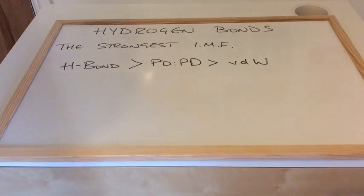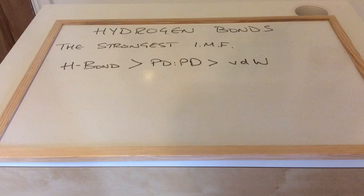In this video I'm going to look at hydrogen bonds. We'll start with the fact that hydrogen bonds are the strongest type of intermolecular force. The three intermolecular forces we need to know about are hydrogen bonds, permanent dipole-permanent dipole, and van der Waals.